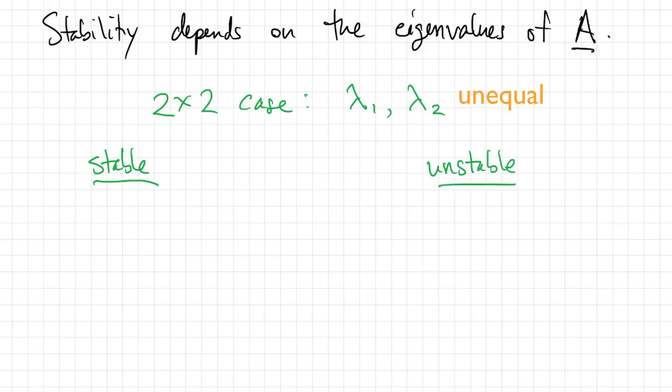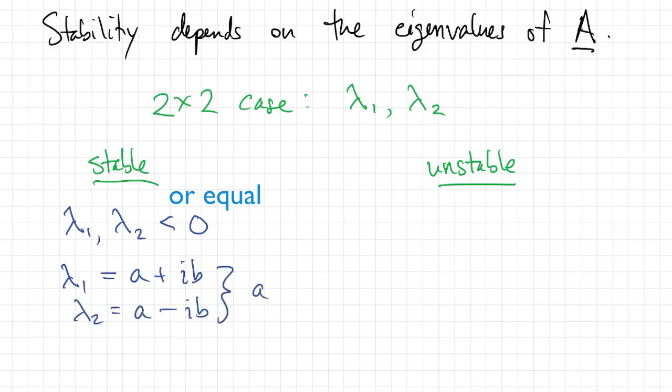If these are real numbers and both negative or less than or equal to zero, then it would be stable. If they're complex eigenvalues and the real part is less than or equal to zero, then it will be stable.